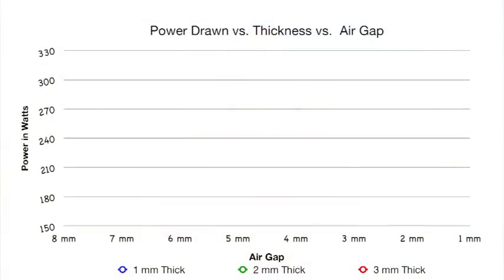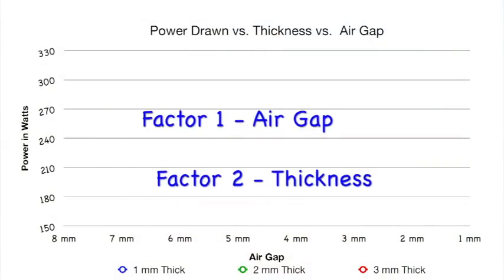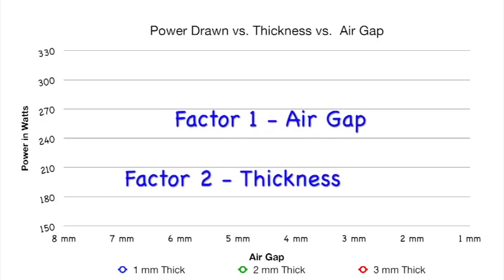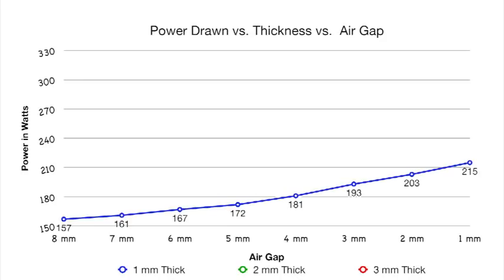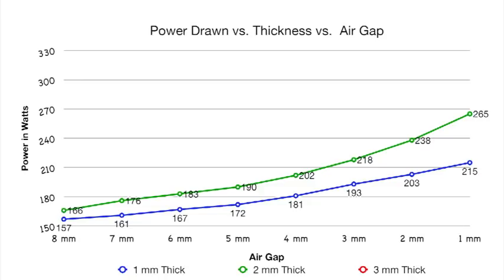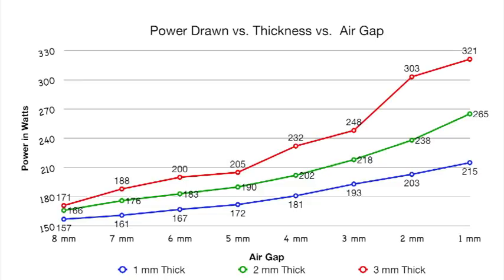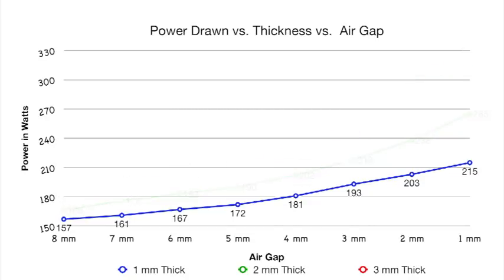Let's get started with our first factor: the difference in copper thickness. Our first graph has air gap on the x-axis and power drawn from the watt meter on the y-axis, comparing 1mm, 2mm, and 3mm discs. Going from 8mm to 1mm air gap: the 1mm copper goes from 157 to about 215 watts; the 2mm goes from 166 to 265 watts; and the 3mm goes from 171 to 321 watts. This is a one-third horsepower motor — about 250 watts — so we are exceeding the power capabilities of this motor.